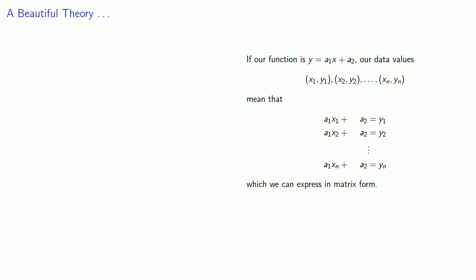And we can express this in matrix form. Now here, remember the unknowns are the a1s and the a2s. And so in matrix form, we want to find a1, a2, where Ax equals b, where A is our coefficient matrix, x is our column of variables, and b is our column of constants.